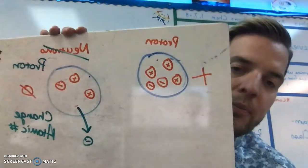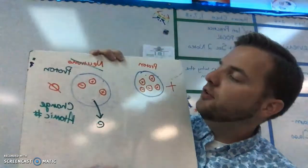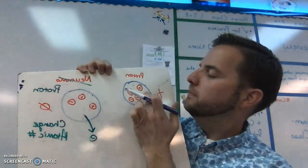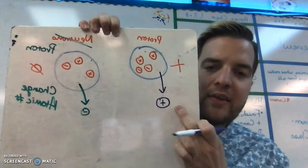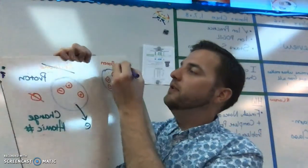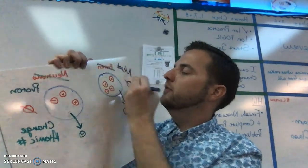The other one is beta positive decay. In beta positive decay, the proton releases a positive particle. This is our current proton—it releases one of its positive quarks. Now inside you see two positives, two negatives, so this is no longer a proton.